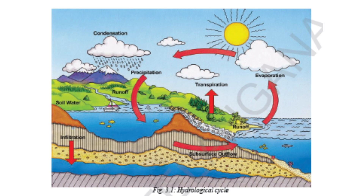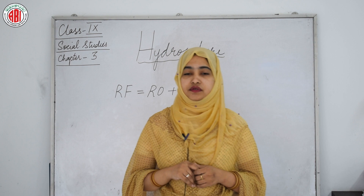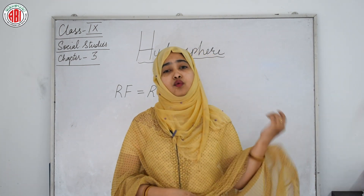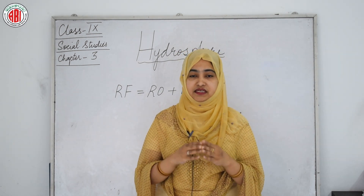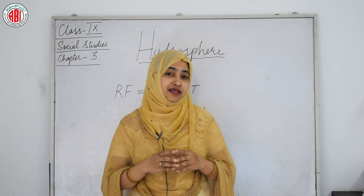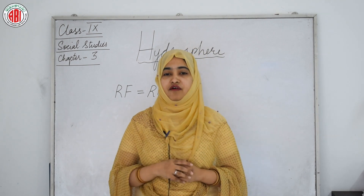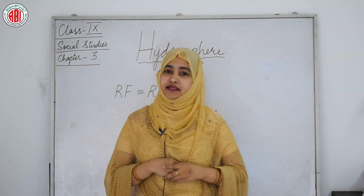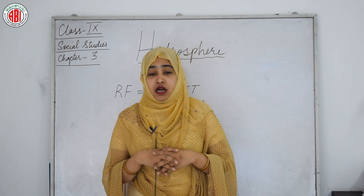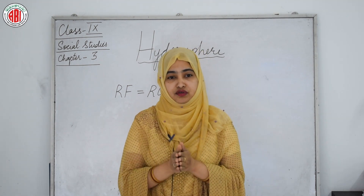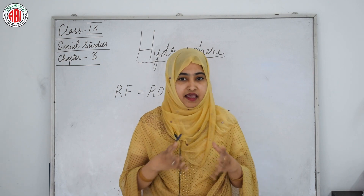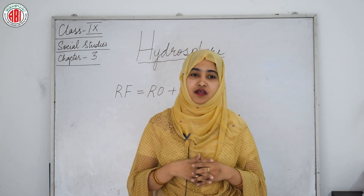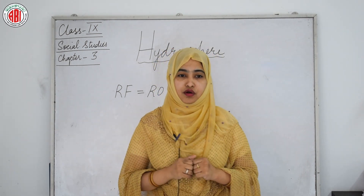Now we will discuss water sources. 97.2169 percent of water is saline ocean water, and only 2.7831 percent is fresh water. The greatest portion of fresh water — 69.56 percent — is in the form of ice and permanent snow cover in Antarctica, the Arctic, and mountain regions. 30.1 percent exists as fresh groundwater. Only 0.34 percent of fresh water is concentrated in lakes and river systems, where it is most easily accessible for our needs.